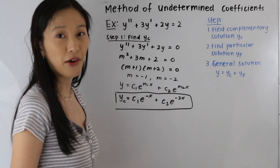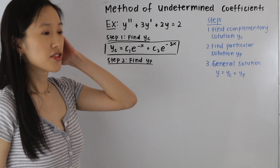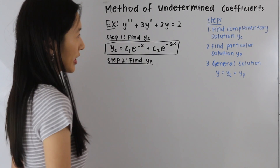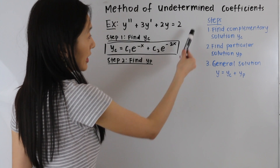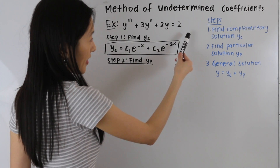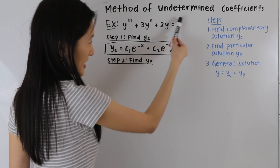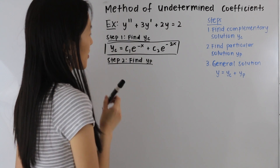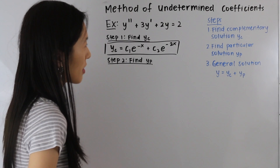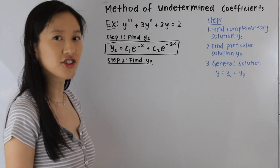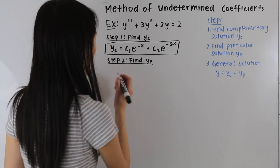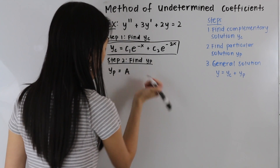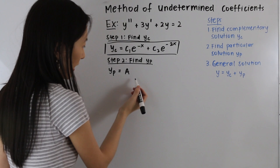Now our next step is to find our particular solution. When finding our particular solution, we want to look at the form of the right hand side of our differential equation in standard form — a lot of people refer to this as g of x. In this case, the form of our g of x term is just a constant, so we assume that our particular solution is of the form yp is equal to A.